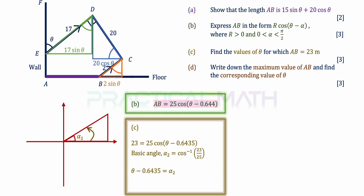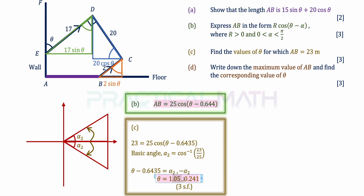In the first quadrant, theta minus 0.644 = alpha 2. In the fourth quadrant, since the angles are all within pi over 2, we describe the angle as minus alpha 2 rather than 2 pi minus alpha 2. Solving for theta by shifting negative 0.6435 to the right-hand side gives theta = 1.05 or theta = 0.241. These are the two answers for part C, rounded to 3SF.